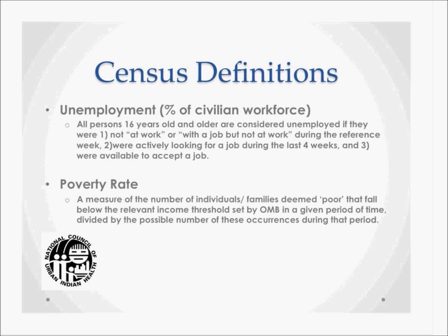Note that not all households contain families, since a household may comprise groups of unrelated people or one person living alone. Unemployment — the percent of civilian workforce — includes all persons 16 years old and older who were not at work or with a job but not at work during the reference week, were actively looking for a job during the last four weeks, or were available to accept a job. The poverty rate is a measure of individuals or families falling below the income threshold set by the Office of Management and Budget, divided by the possible number of occurrences during that period.